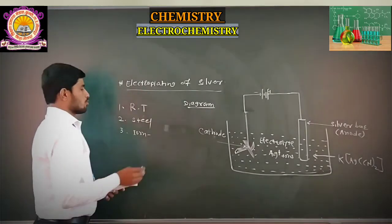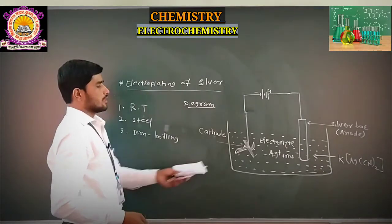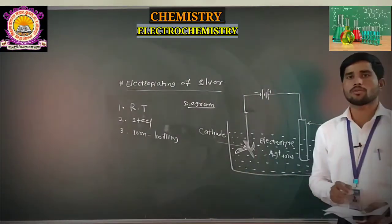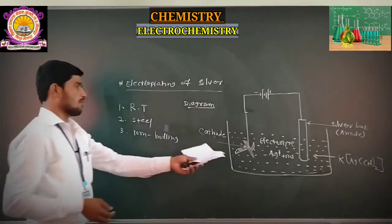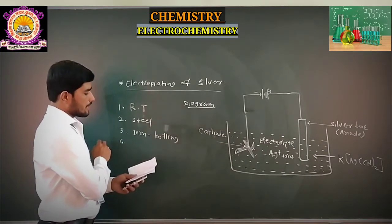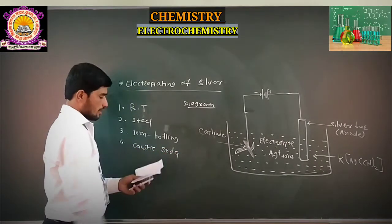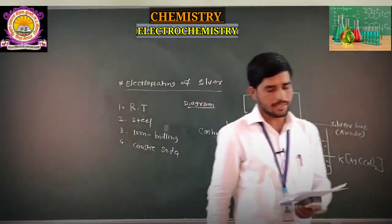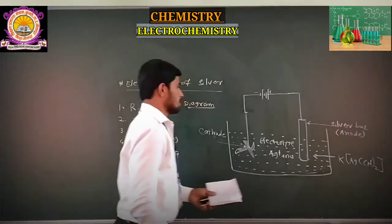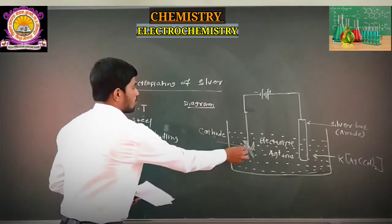Whatever dust or grease is present on the surface of the spoon is cleaned by means of a boiling process. Whatever impurities are present on the surface of the spoon will be removed. Then it is treated with caustic soda, which again removes the impurities present on the surface of that metal.